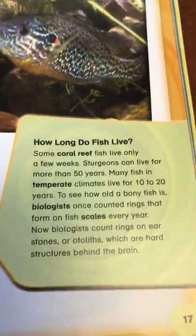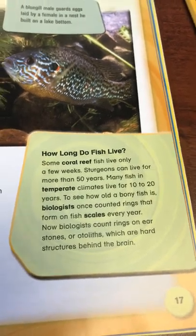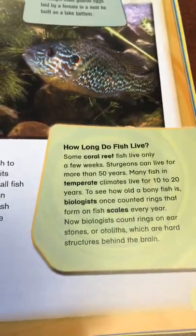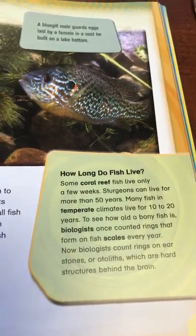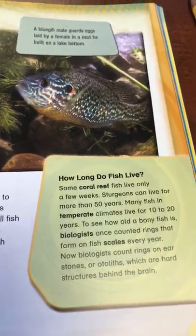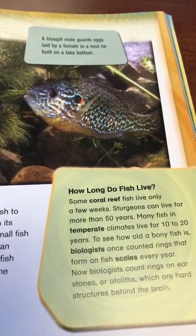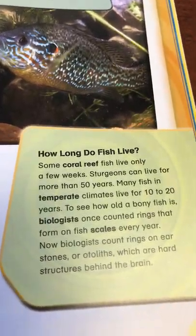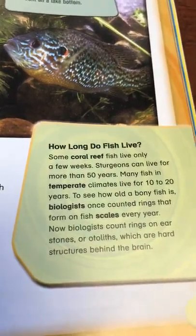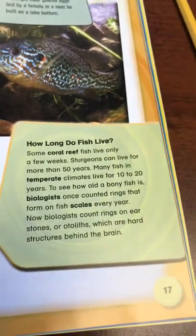How long do fish live? Some coral reef fish live only a few weeks. Sturgeons can live for more than 50 years. Many fish in temperate climates live for 10 to 20 years. To see how old a bony fish is, biologists — scientists who study animals — once counted rings that form on fish scales every year. Now biologists count rings on ear stones, or otoliths, which are hard structures behind the brain.